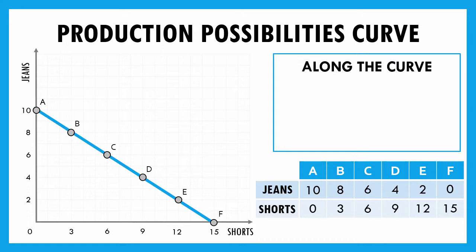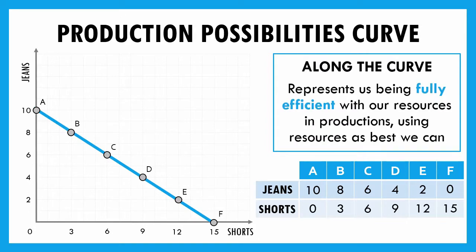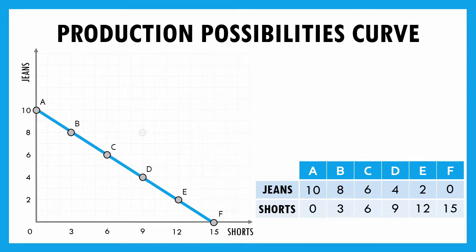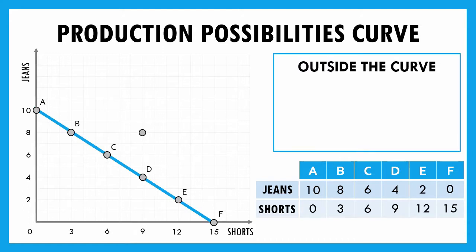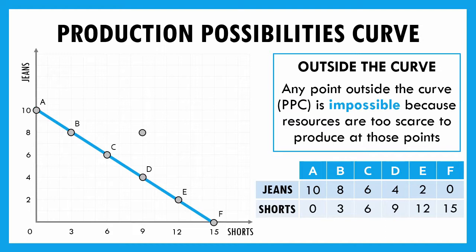Looking at our production possibilities curve, let's talk about what different areas or points represent. Any point along that curve — like points A, B, C, D, E, and F — represents us being fully efficient, using all our resources — capital, land, and labor — to the best of our ability. If I wanted to make eight pairs of jeans and nine pairs of shorts in a day, I couldn't do it because that's outside the curve. Any point outside the curve is impossible because our resources are too scarce. The PPC already represents us being fully efficient, so we can't go past it.